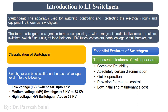Switchgear is classified on the basis of the voltage level on which it operates. We have low voltage switchgear which operates on a voltage up to one kilovolt, then medium voltage switchgear which operates on a voltage up to 33 kilovolts. In this particular unit, we will discuss about the low voltage switchgear only, which is used to protect the low voltage circuit from a high voltage circuit.